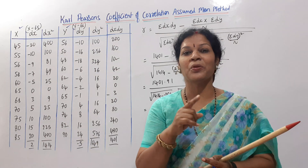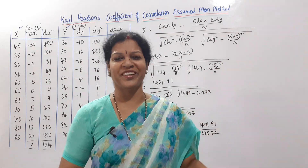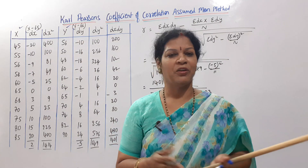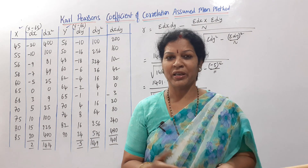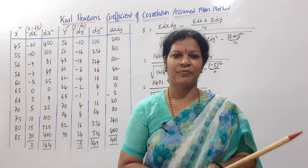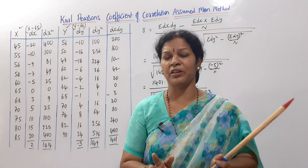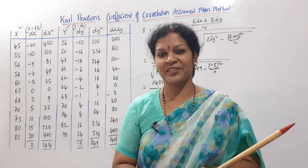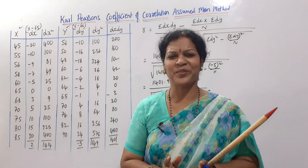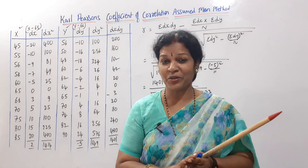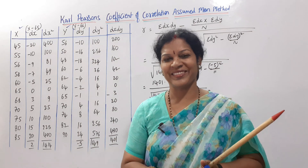When I was a student, I used the actual mean method — the formula is simpler: sigma xy divided by the square root of sigma x-squared into sigma y-squared. One small mistake in a big formula ruins the whole problem. Hope Karl Pearson's coefficient of correlation is now complete. Next class we'll focus on rank correlation, which is quite interesting and easy. Stay connected, check out the playlist, practice well, and revise before exams. Good luck!